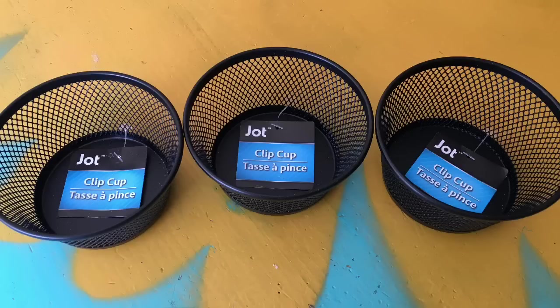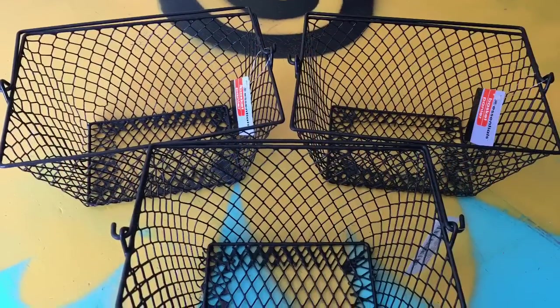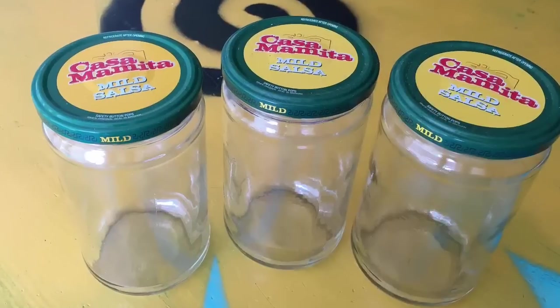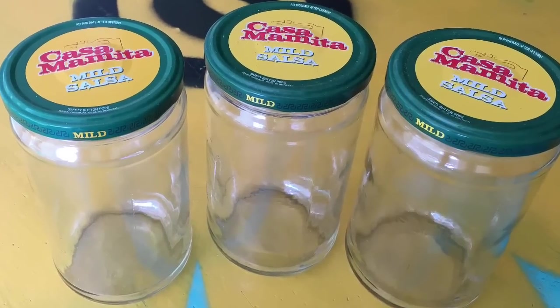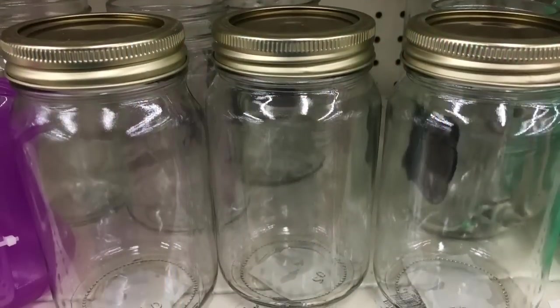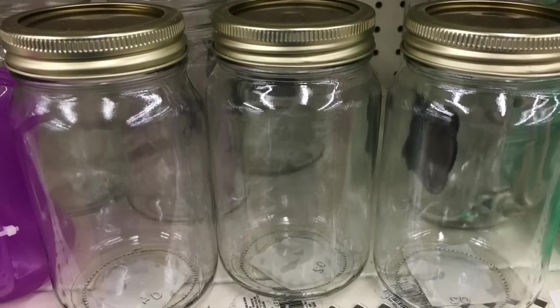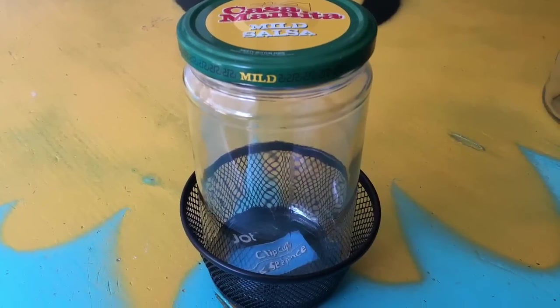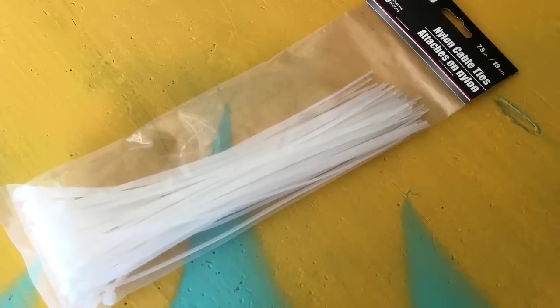First thing we're going to need is these three clip holders from the Dollar Tree. I got them in black. These three wire baskets which we actually use for another project but we're going to use their handles. Three jars—I had these three leftover upcycled salsa jars from Aldi's, but you can find these mason jars at the Dollar Tree. Just make sure that they fit inside the clip cup.